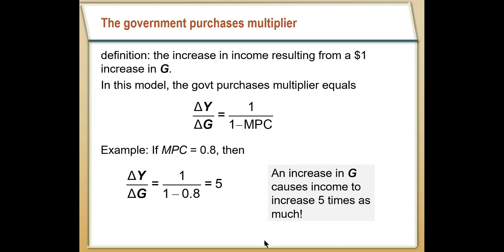As a simple example, let's say people spend 80% of their income — the marginal propensity to consume is 0.8. How much extra income do we get from a $1 increase in government spending? That's just the government spending multiplier: one over one minus 0.8, which equals five. So every time government increases spending by one dollar, total income ΔY is going to be five. Total income increases by five dollars for every dollar the government increases spending.